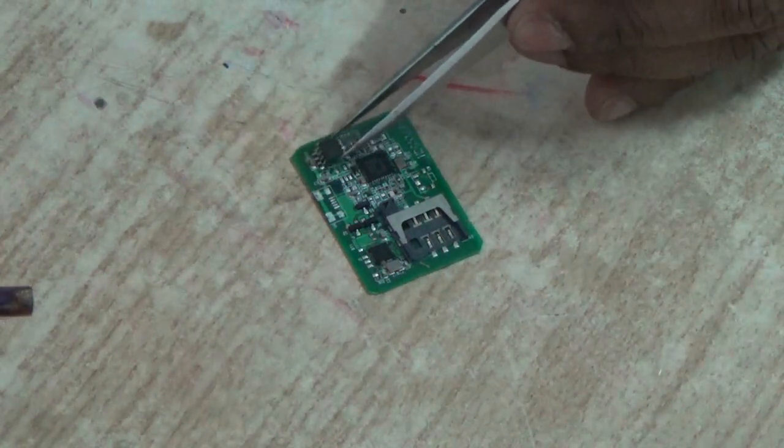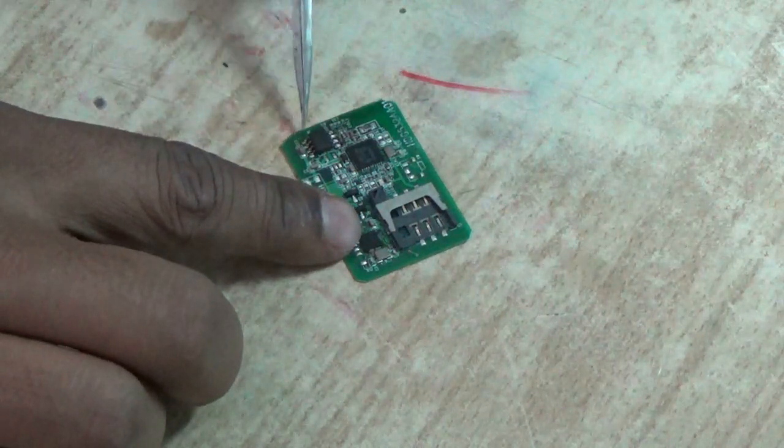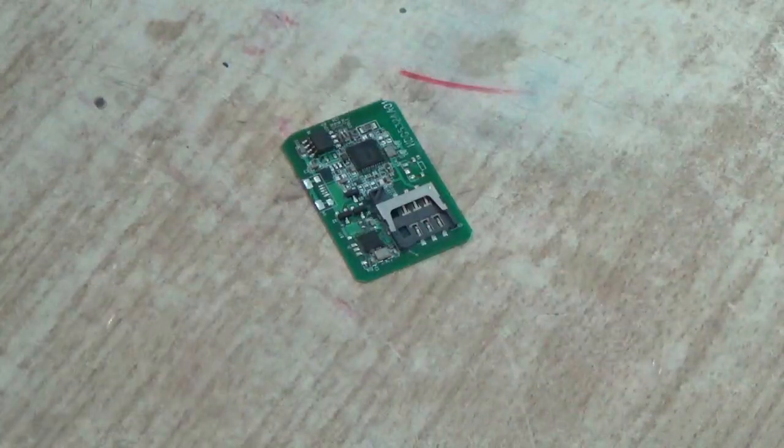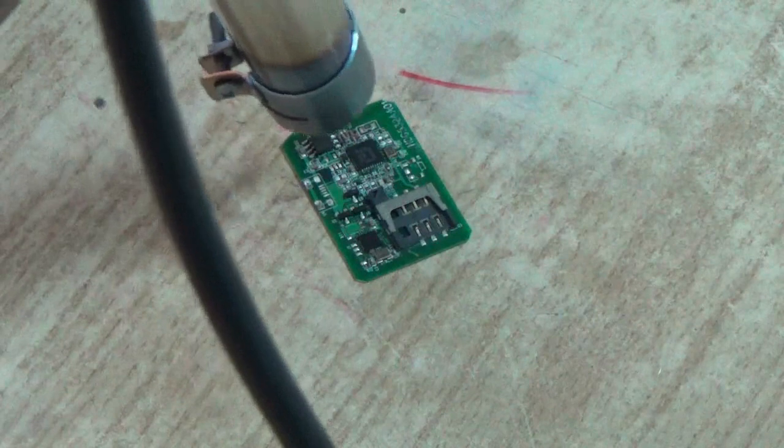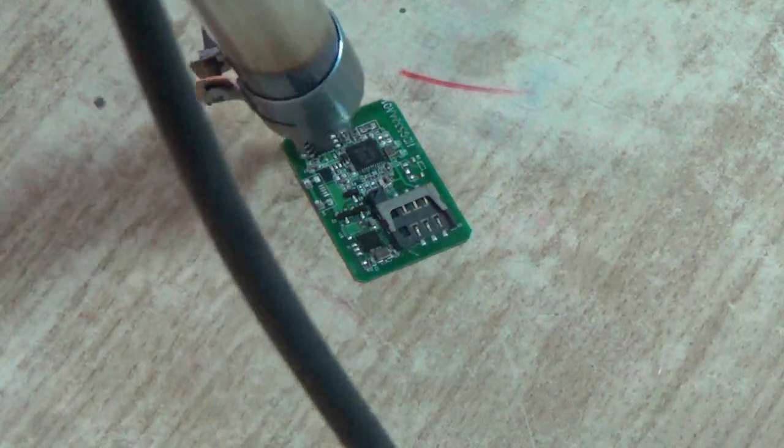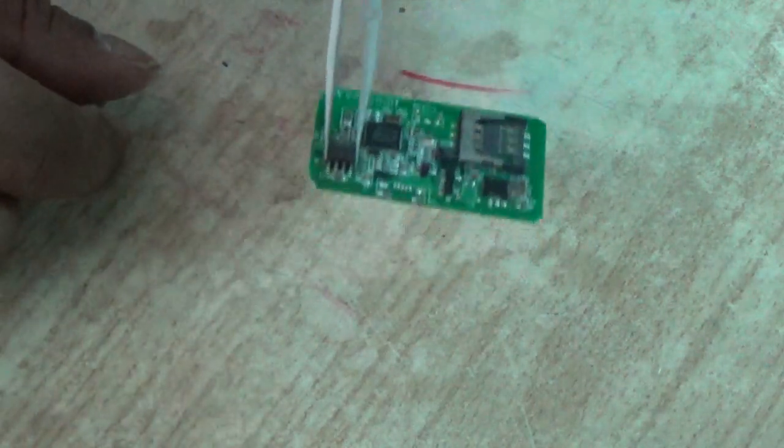Now replace the new chip on top of it. Carefully place it exactly on top of the pad and then heat it with the hot air gun. You can see the solder is getting melted and then the component will get nicely soldered on the pad. See, it is very nicely soldered.